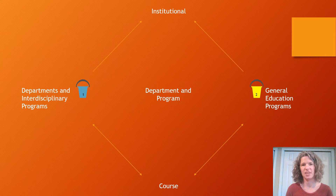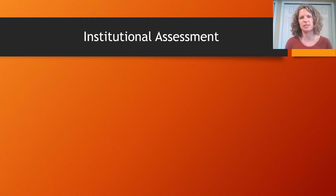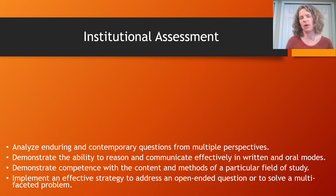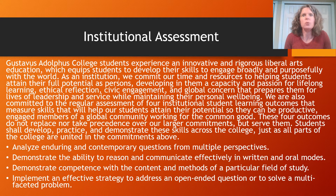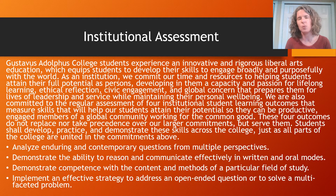I'm going to start with the institutional assessment level, the top level. We at Gustavus have four student learning outcomes at the institutional level, and we also have a preamble to those four outcomes. What we decided as an institution is that we would have four institutional outcomes that we would assess regularly, but we didn't want to say those were the only things we cared about in terms of student learning, habits, dispositions, and skills. We wanted to name other things we wanted students to be able to do — those are in the preamble — but we've committed to assessing the four outcomes on a regular basis.